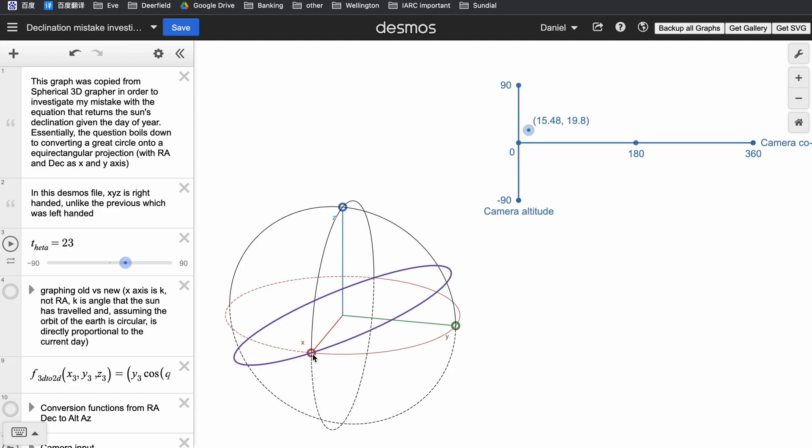This is the vernal equinox, which happens around the 21st of March, and it's the time and place in the sky where the sun crosses the celestial equator, which is this x-y curve, and rises upwards in declination. The other side is different because it goes down in declination, and this happens in September. But this is March, this is June, this is September, and this is December.